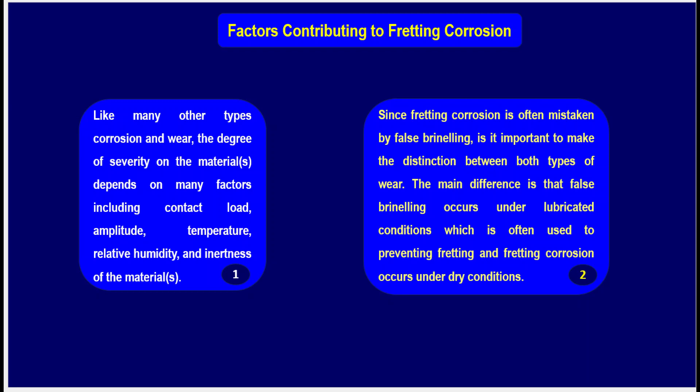Factors contributing to fretting corrosion: like many other types of corrosion and wear, the degree of severity depends on many factors, including contact load, amplitude, temperature, relative humidity, and inertness of the material. Since fretting corrosion is often mistaken for false brinelling, it is important to make the distinction. The main difference is that false brinelling occurs under lubricated conditions — which is often used to prevent fretting — while fretting corrosion occurs under dry conditions.